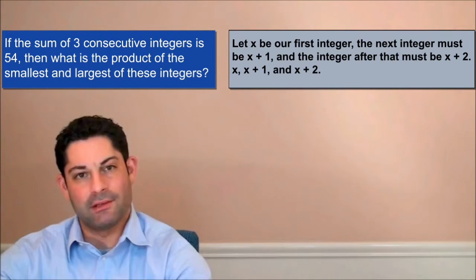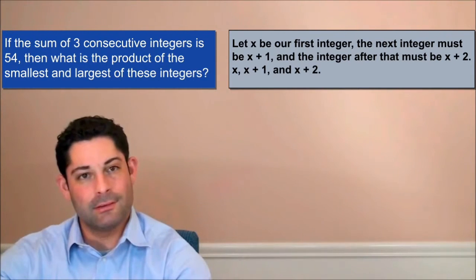So we have three consecutive integers: x, x plus 1, and x plus 2.